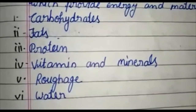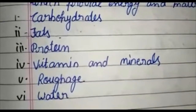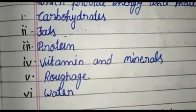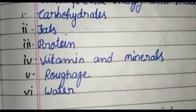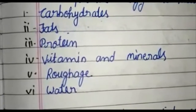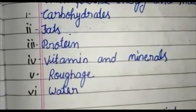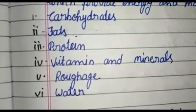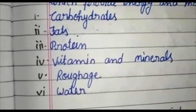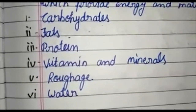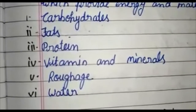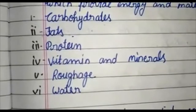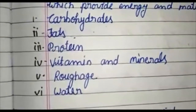Next, roughage. Roughage is also essential for proper digestion. The fibrous part of our food is called roughage. Carrot, radish, spinach, ladyfinger, beans, cauliflower, etc. are rich sources of roughage. Roughage helps in the passing of food through the alimentary canal. It also helps in the easy excretion of waste.